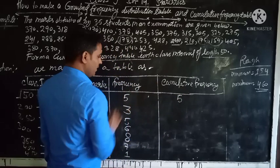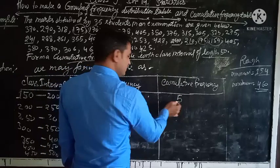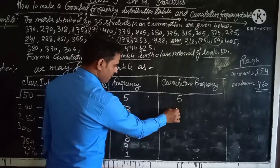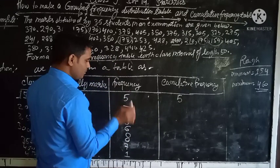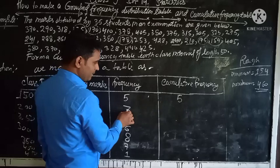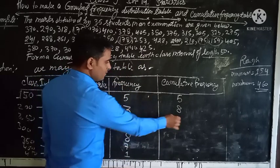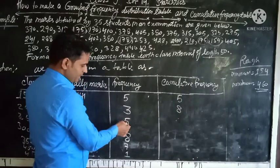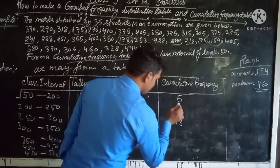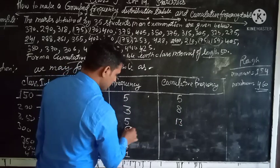Suppose this is the first cumulative frequency. This is equal to 5. And then the cumulative frequency of second class is 5 plus 3, which means 8. And the third cumulative frequency is 8 plus 5, which is 13, and then 13 plus 6.